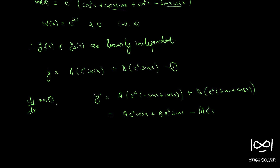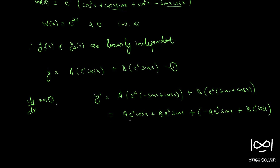Simplifying, the first two terms A·e^x·cos(x) + B·e^x·sin(x) is just y. So we can write y' = y + (−A·e^x·sin(x) + B·e^x·cos(x)). Let this be equation 2.